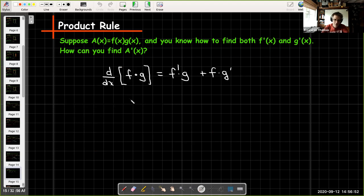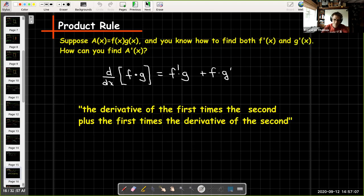So our product rule is that the derivative of f times g is f' times g plus f times g'. It's good to say this in words. That says the derivative of the first times the second plus the first times the derivative of the second.